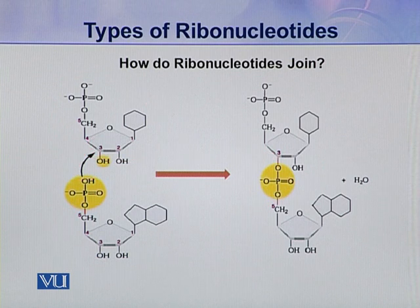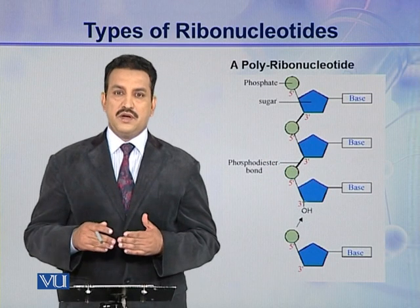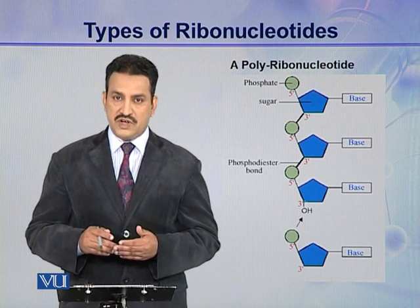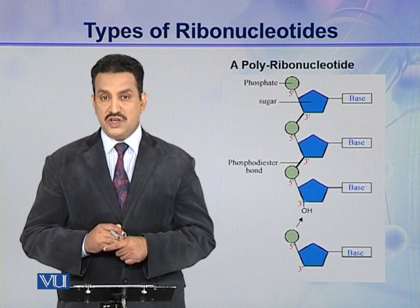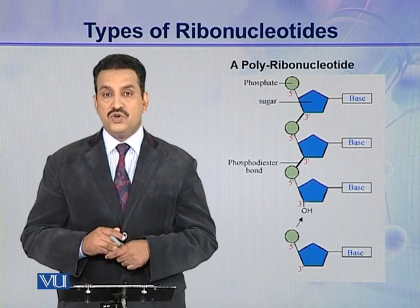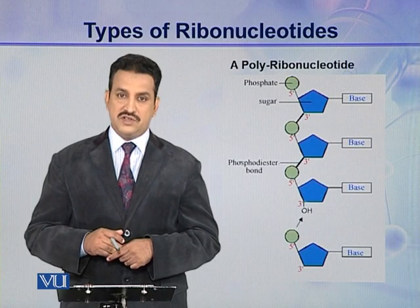So in this way, a polymeric compound consisting of many ribonucleotides is formed. Many ribonucleotides join together and they make a polymeric chain which is called a polyribonucleotide, or a ribonucleic acid.